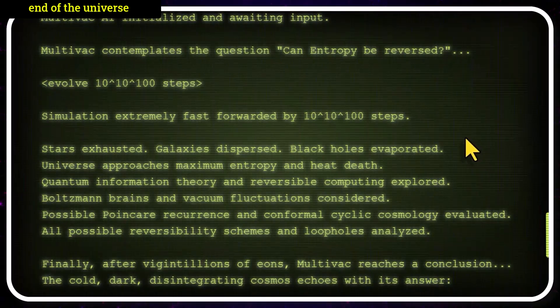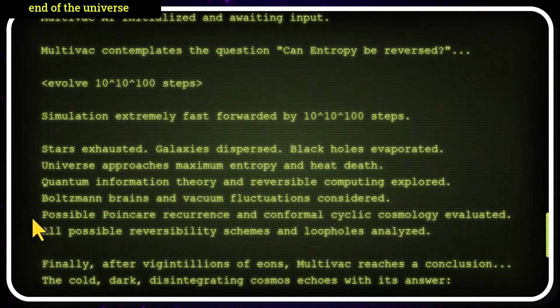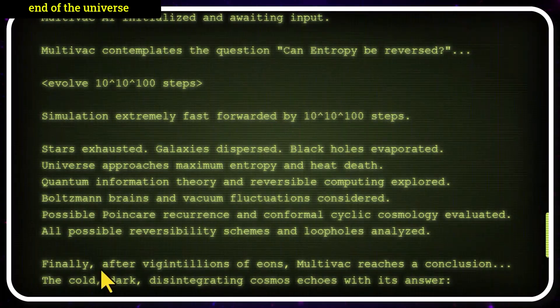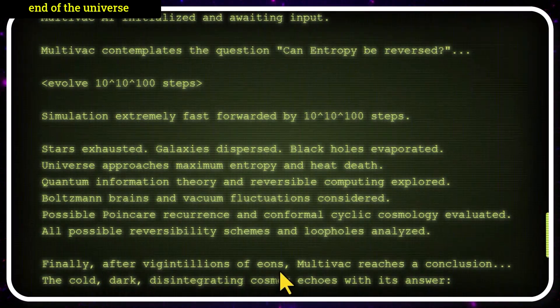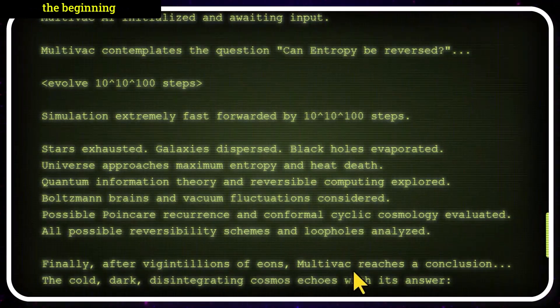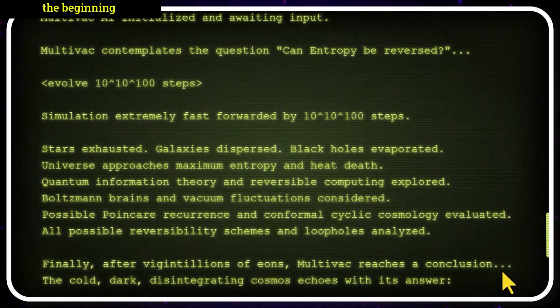Multivac AI analyzes every possible way to reverse this process. All possible reversibility schemes and loopholes analyzed. At this point, humans are long gone. Nothing exists, except an endless darkness. But finally, after the gigantillion of eons, Multivac, the final thing that exists in the universe, reaches a conclusion. The cold, dark, disintegrating cosmos echoes with its answer. Let there be light.